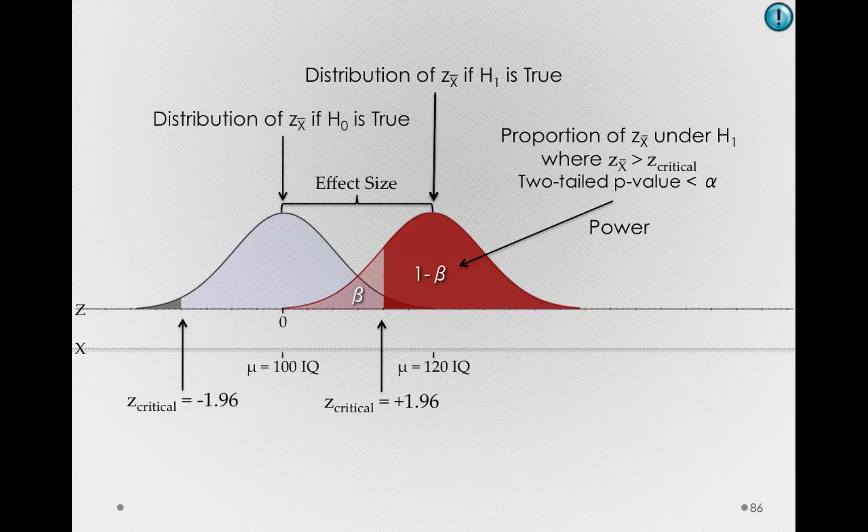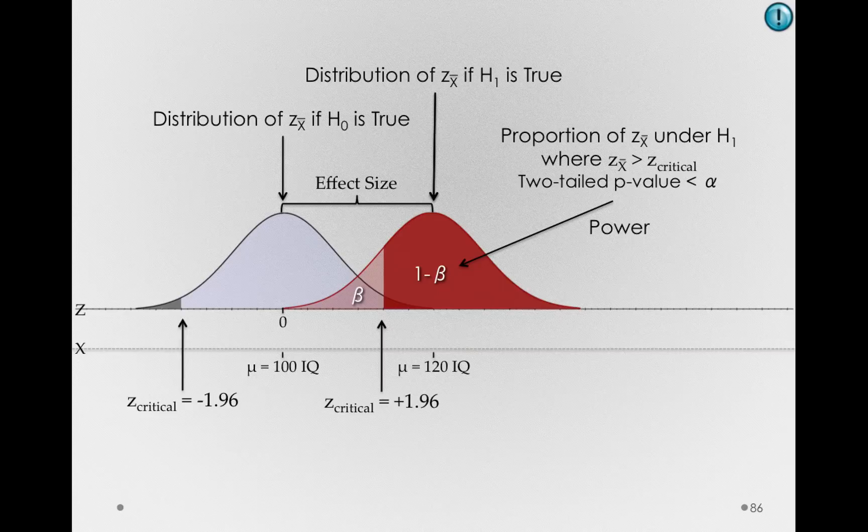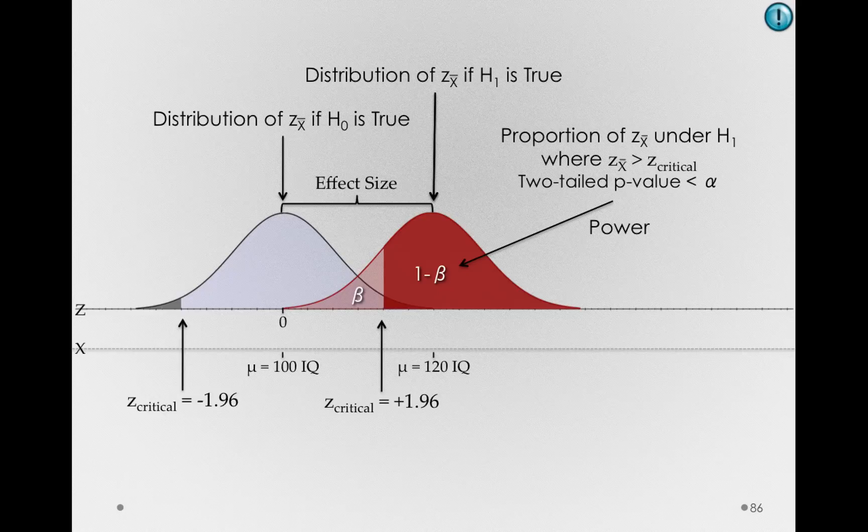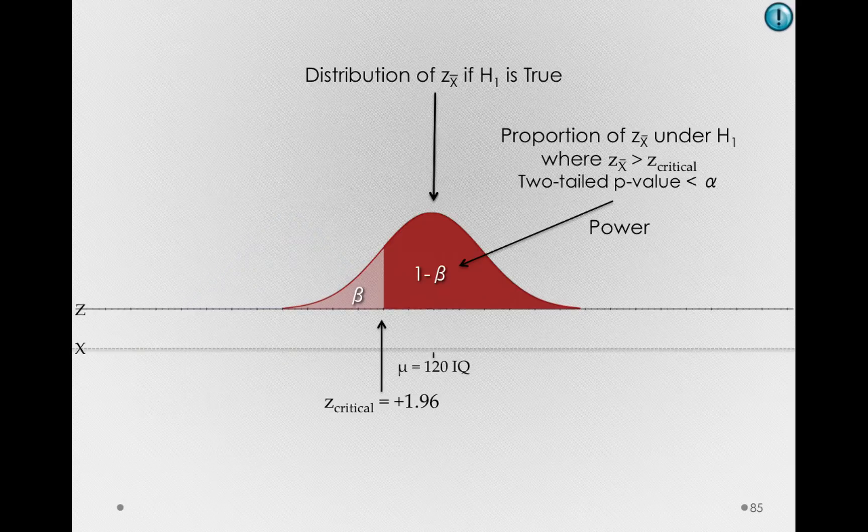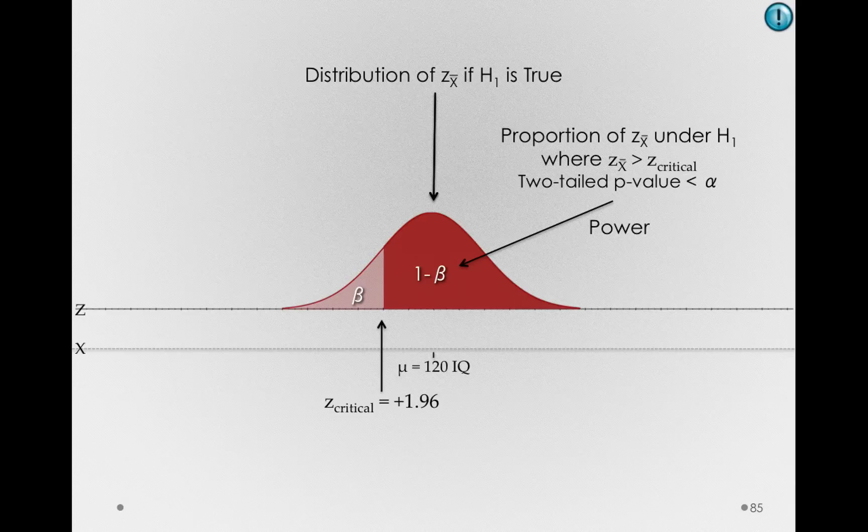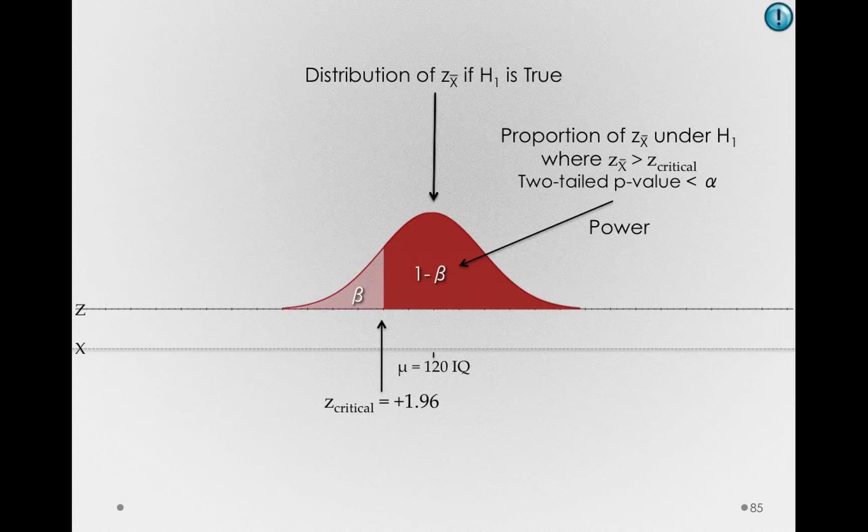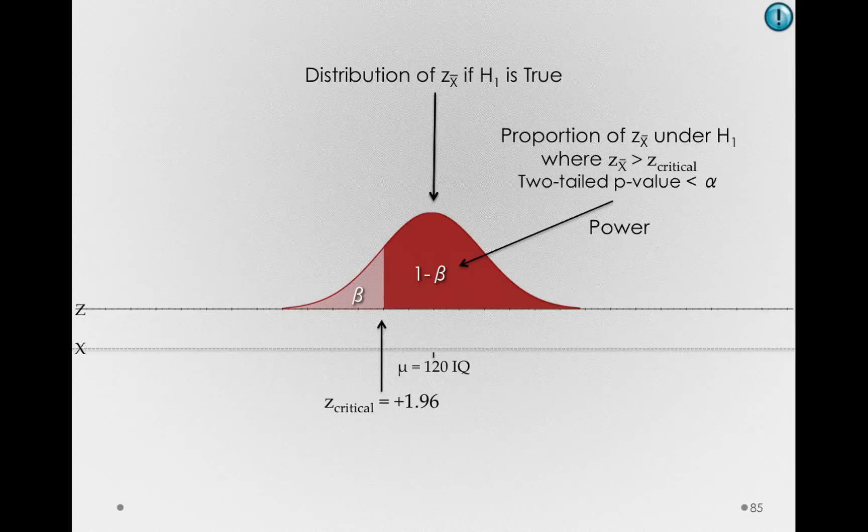And yet, we retain the idea of the null hypothesis distribution because that's where we start with as scientists. That's the only thing we can use as a reference point for whether our sample is unlikely to be caused by chance. But make sure you see that connection. Our sample is coming from this distribution if we're talking about power. Remember, power is only defined if there's a true effect. So we have to consider our sample as coming from this distribution, which is why we have a region that counts as power and a region that counts as a miss.